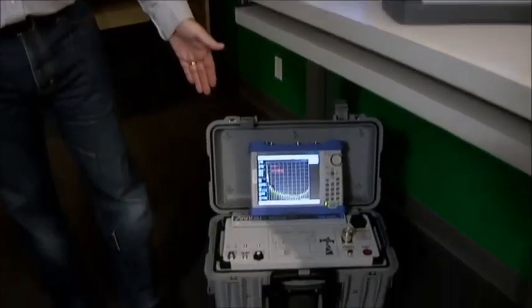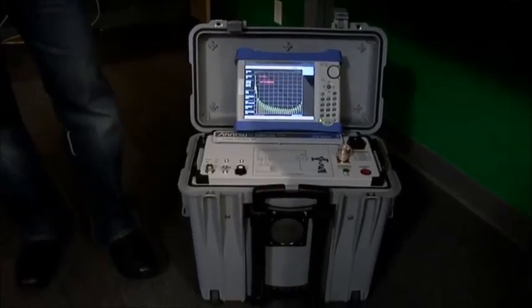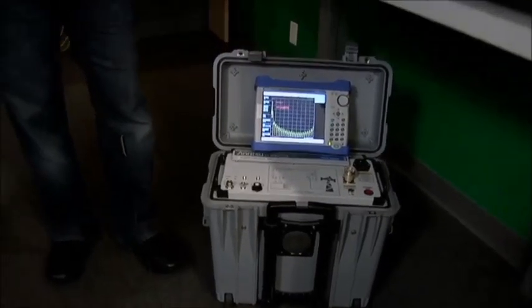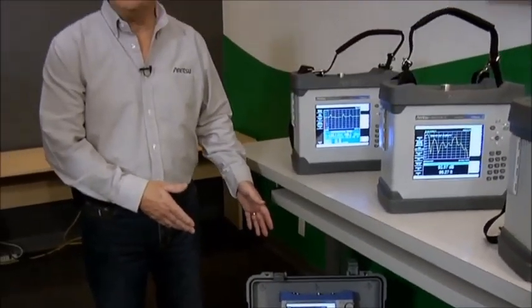And what differentiates the second generation PIM tester from the first generation? Well, our first generation PIM tester was on wheels and was AC operated. The new unit is one-fourth the size, one-half the weight, and battery operated. So what does it mean to the guy in the field?